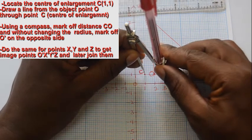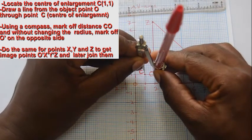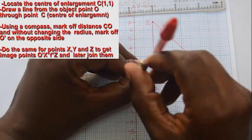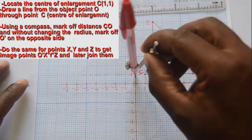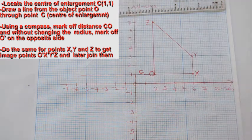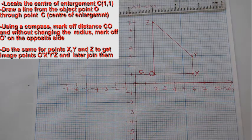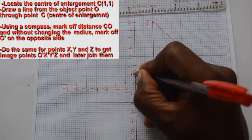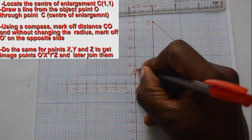Without changing the distance of the compass stretch, mark off an arc opposite the center of enlargement once, since the scale factor is negative 1.